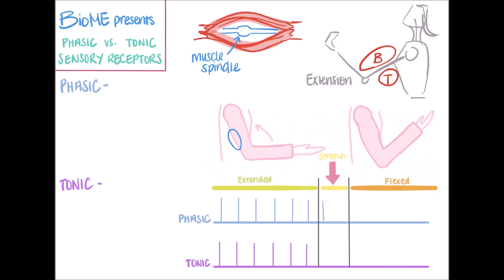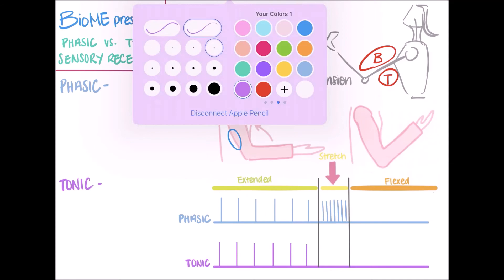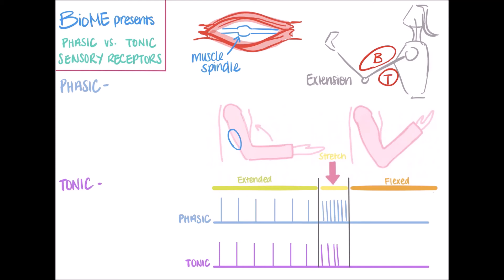Each line here represents one action potential. When you start to move your arm into a flexed position, the sensory receptors are going to start firing at an increased rate. The only difference here is that the phasic receptors react more quickly.